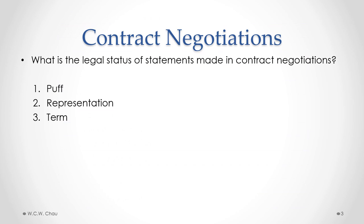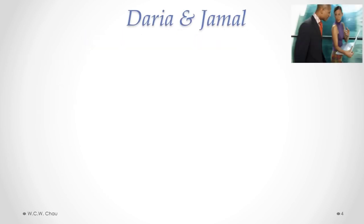In many contract negotiations, there is a lot of back-and-forth communications between the two parties involved, and those communications have certain various legal status. The three different types are a PUF, a representation, and a term. Let's go back to our friends Daria and Jamal to help us understand what is a PUF versus a representation versus a term.